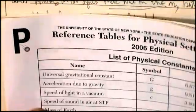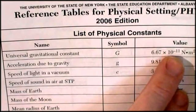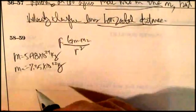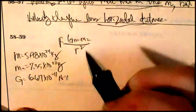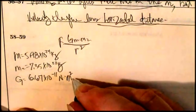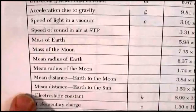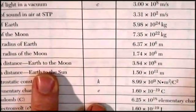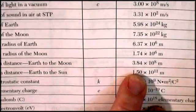Big G — the universal gravitational constant, not the acceleration due to gravity — is 6.67 times 10 to the negative 11 newton meters squared per kilogram squared. The radius, the mean distance from Earth to the Moon — it's a little closer sometimes and a little further other times, but that's the average — is 3.84 times 10 to the 8 meters.